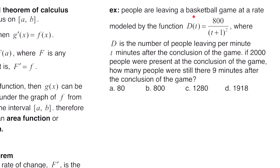This example says people are leaving a basketball game at a rate modeled by the function d of t equals 800 over the quantity t plus 1 squared, where d is the number of people leaving per minute t minutes after the conclusion of the game. If 2,000 people were present at the conclusion of the game, how many people were still there 9 minutes after the conclusion of the game? There are 2,000 people when the game concludes, and this formula describes the rate at which people are leaving per minute.